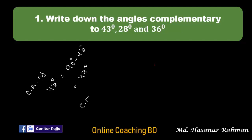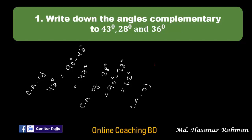Now complementary angle of 28 degrees — that should be 90 degrees minus 28 degrees, and that is 62 degrees. And the complementary angle of 36 degrees will be 90 degrees minus 36 degrees, and that is 54 degrees. That is the answer of number one.